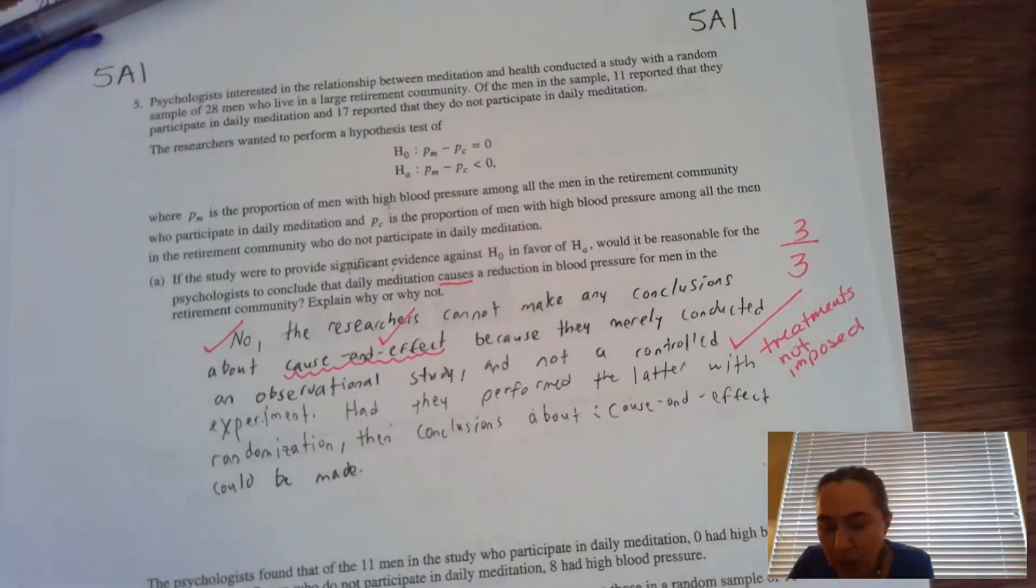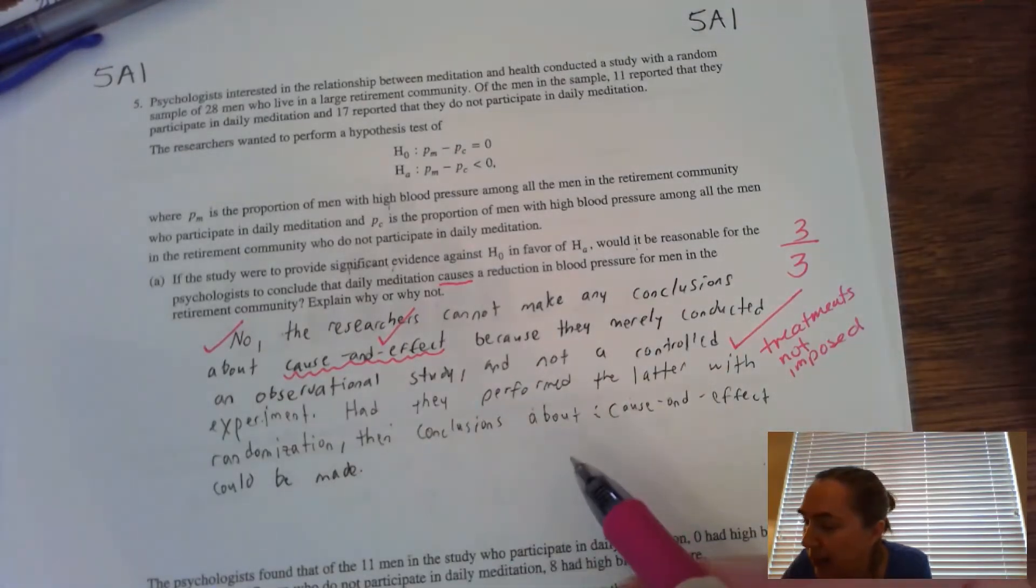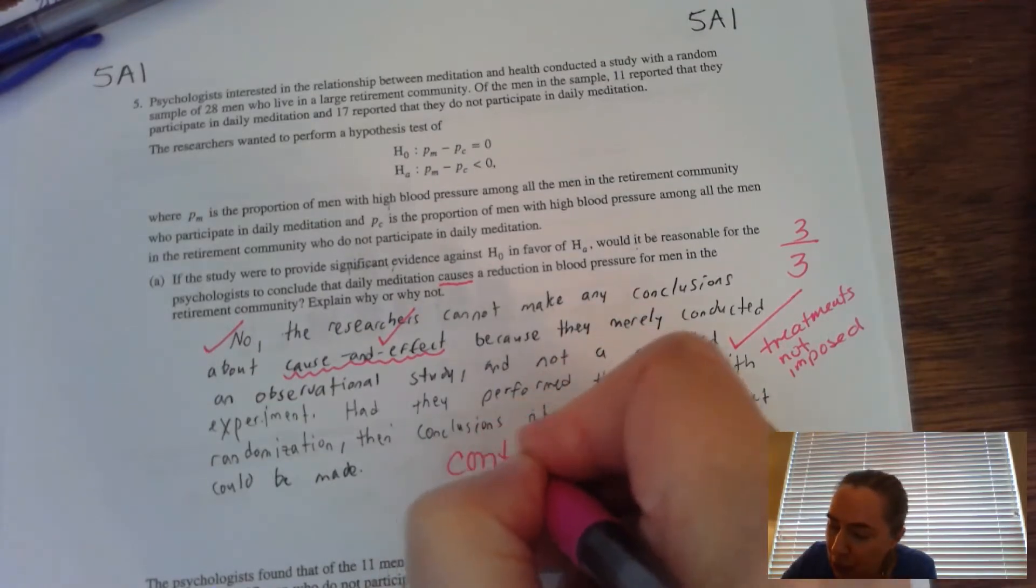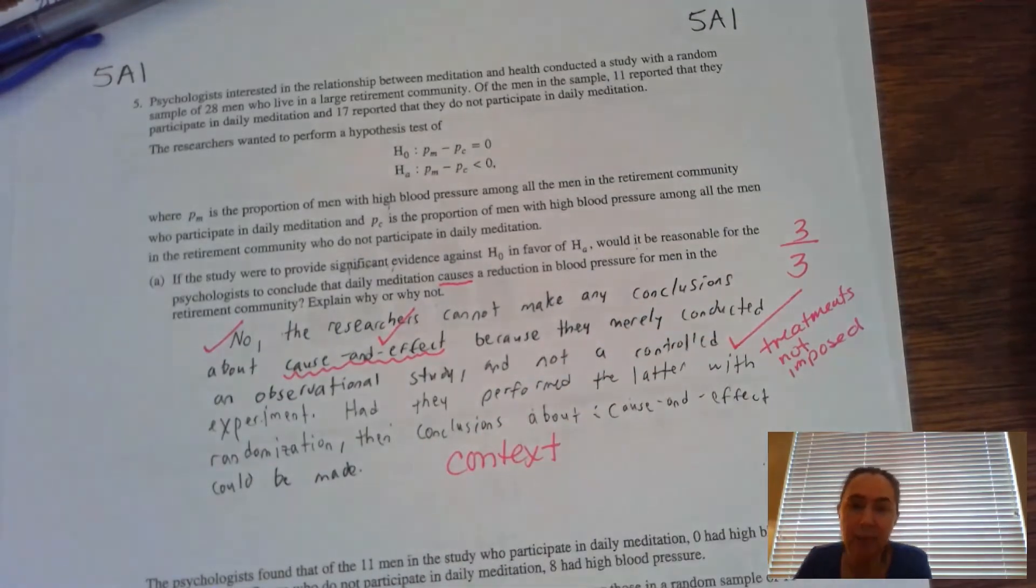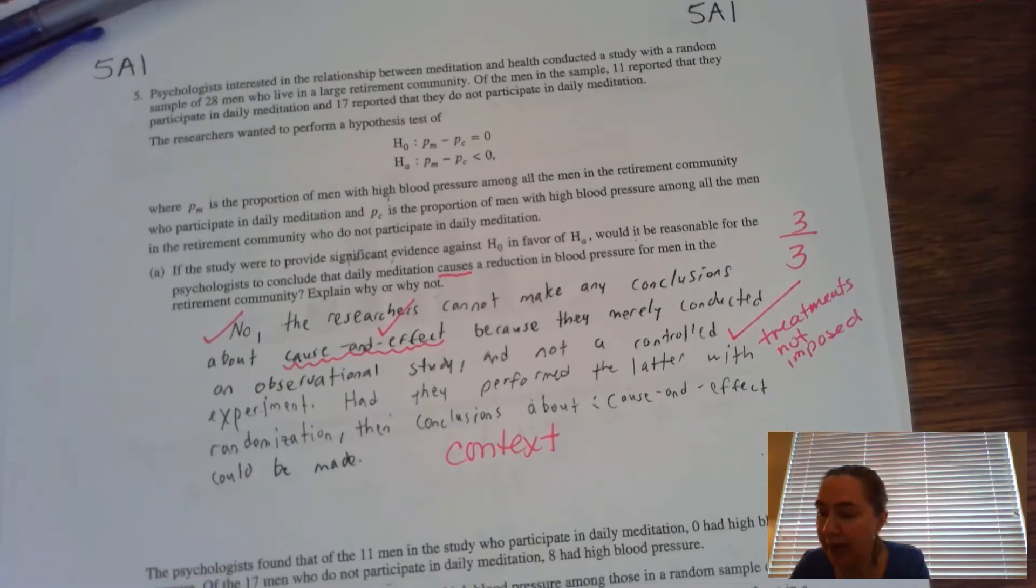And so there are three points available for this particular question. Making sure also that you have context in here, making sure that that's there too, to get you full credit. So that's what we're looking for, for part A in this question.